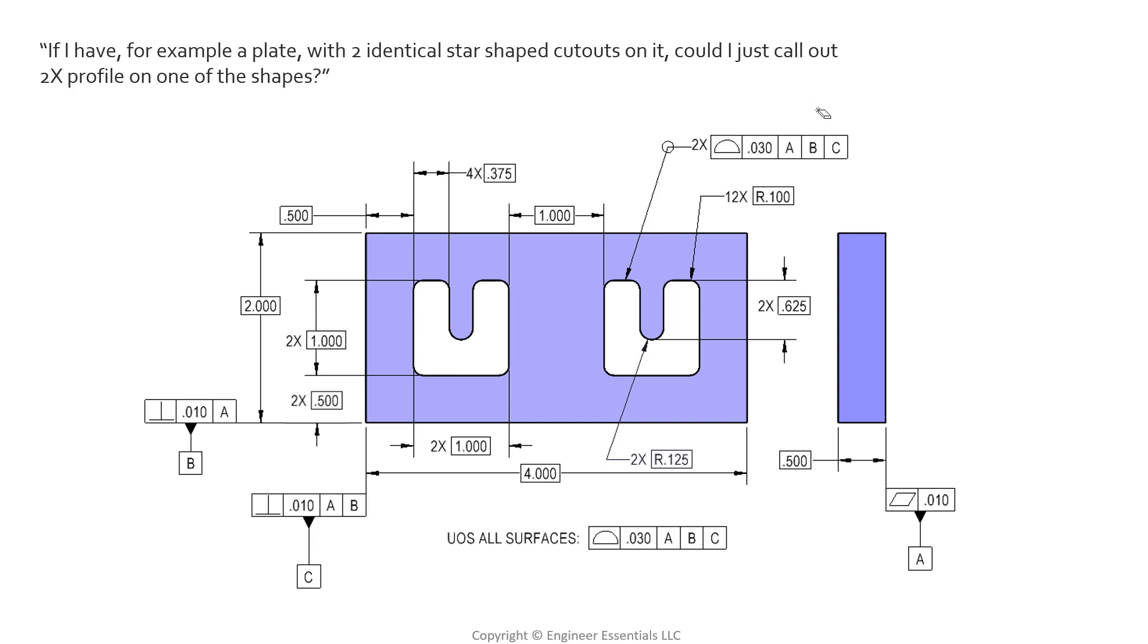Furthermore, if we're going to analyze this feature control frame, the best place to start is to read it from left to right. So starting way over here with the profile of a surface modifier, we see the all-around circle at the elbow of this leader line. That tells us that we're going to analyze this surface continuously until it wraps back around itself.